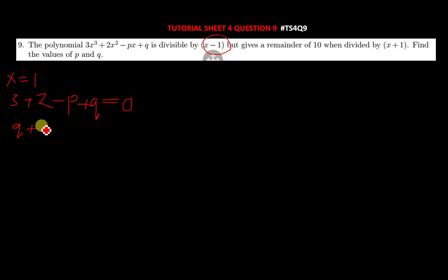Meaning you have q minus p equal to... this is 5, so when it crosses the equal sign, it becomes negative 5. You can make it positive like that to equal 5. This is our first equation, equation 1.